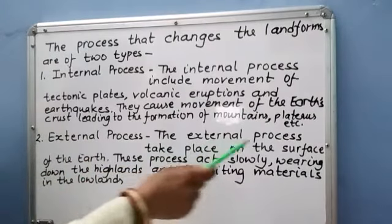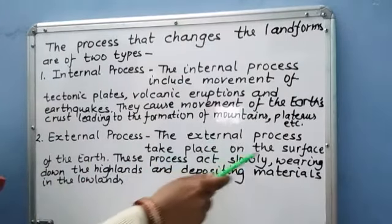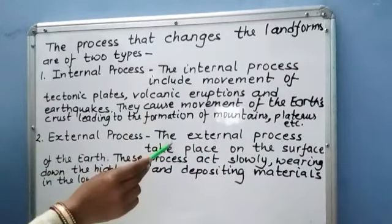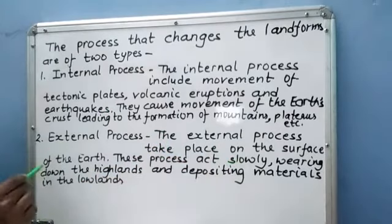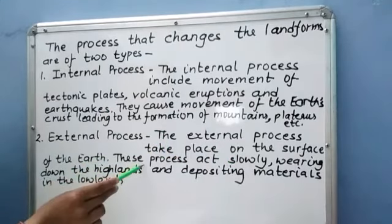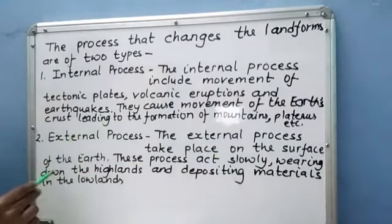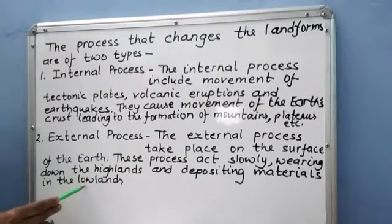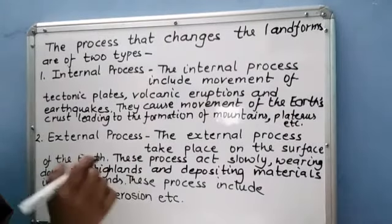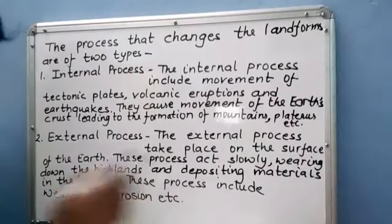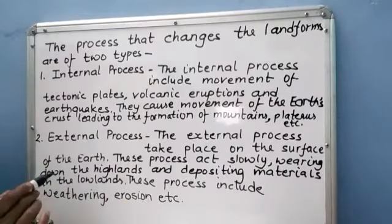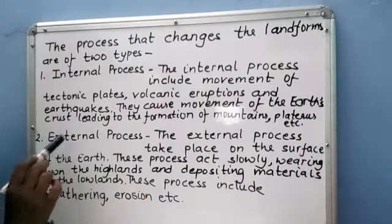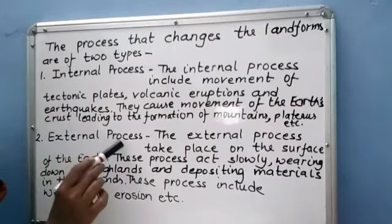External processes take place on the surface of the earth. These processes act slowly, wearing down the highlands and depositing materials in the lowlands. These processes include weathering and erosion.